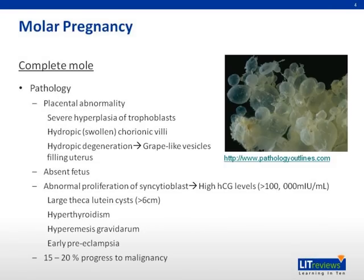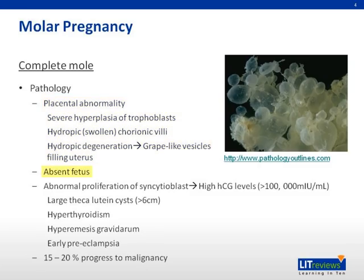In a complete mole, there is non-invasive trophoblastic proliferation, which leads to diffuse swelling of the chorionic villi and hydropic degeneration. This gives the mole its characteristic appearance of grape-like vesicles filling the uterus. Notably, in a complete mole there is an absence of fetus, fetal villi, or fetal red blood cells. In addition, there is abnormal proliferation of syncytiotrophoblast, which produces high levels of HCG.